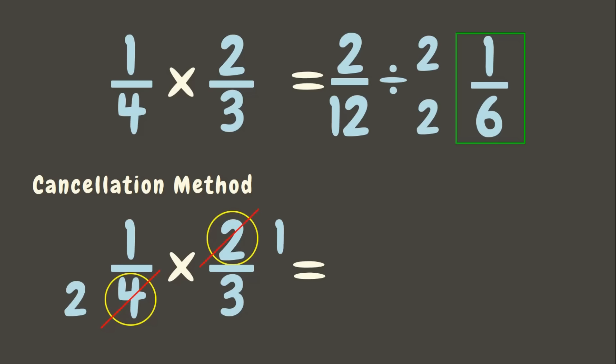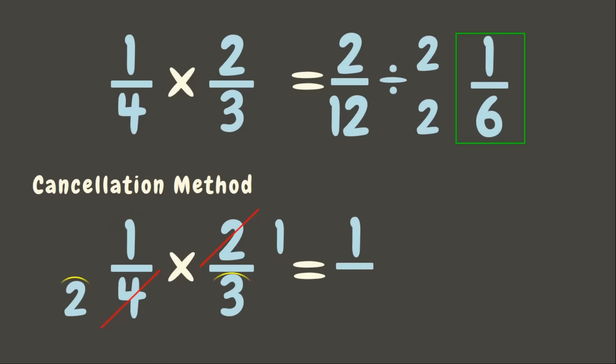Can you still see another numerator and denominator that have a common factor? No more. Now we can multiply the numerators and denominators. 1 times 1 is 1, and 2 times 3 is 6. Our answer is 1 sixth.